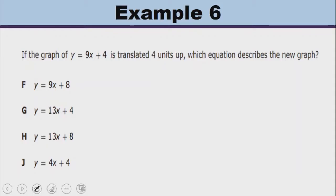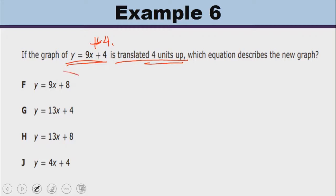In this example, you are given a function Y and asked for the new equation if Y is translated four units up. To translate any function up by a number of units, you add that number to it. So the new function is going to be Y equals nine x plus four, plus another four, which gives eight. So in this case, F is the answer.